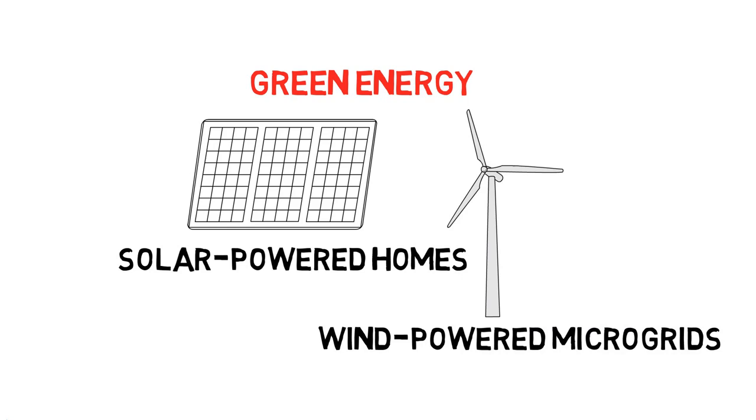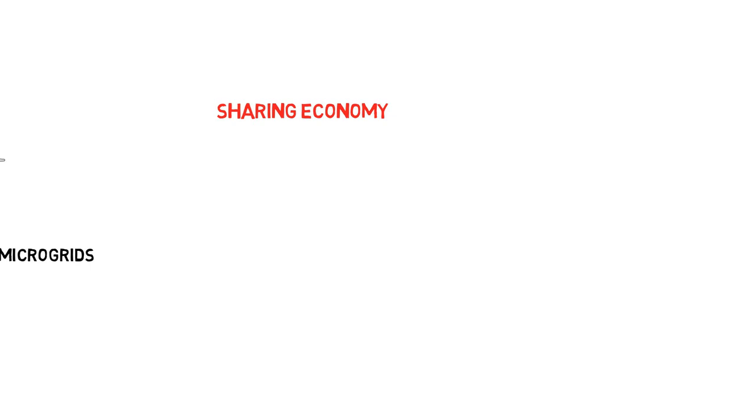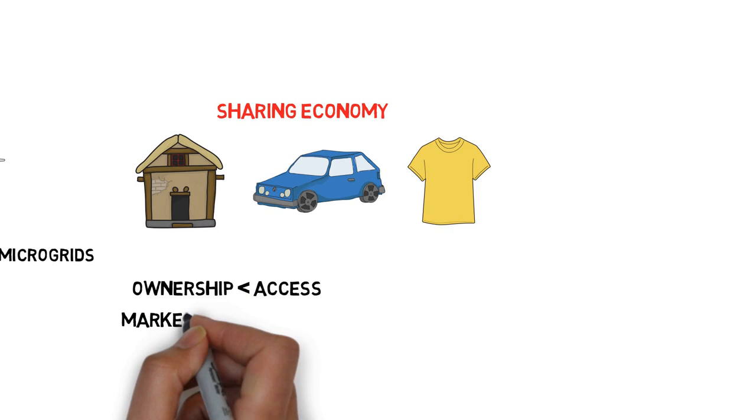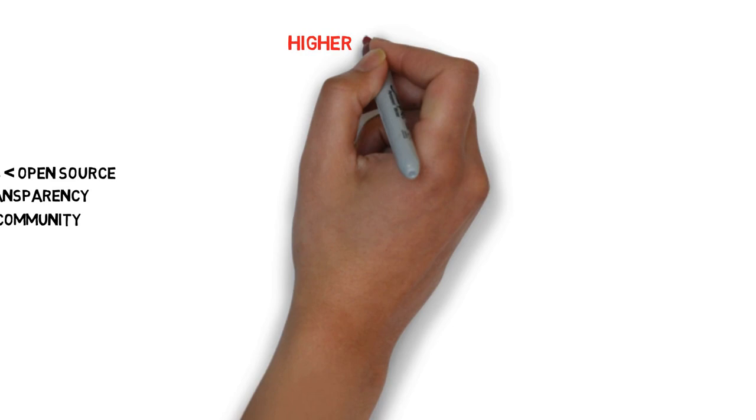And especially since the Great Recession, perhaps due to diminished trust in the government and business leaders, people are increasingly sharing their homes, cars and even clothes, which is to say that ownership is becoming less important than access. All this also means that markets are giving way to networks, and self-interest is giving way to collaborative interests. We are moving from property rights to open source, from privacy to transparency, and from a search for autonomy to a search for community.